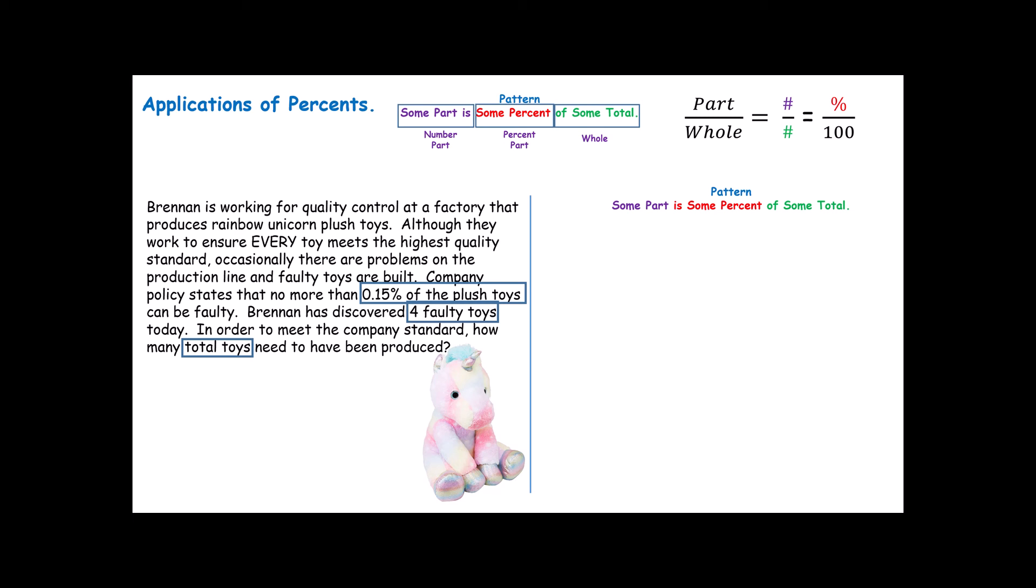Can you think about what your part, your percent, and your total are? If you need a second to try this on your own, I'd recommend pausing the video. I'm going to assume that if you wanted to do that, you already have. Hopefully, you realize that the defects or the faulty toys are a percent of the total toys. The most important thing about this problem is realizing what is your part and what is your whole. The percents are easy to spot because of the percent sign. So, when you go to fill in your proportion, the number part is the number of faulty toys. Do we know that? Well, the problem told us there were four. The percent that are faulty is the .15, and the question asks us what the total is.